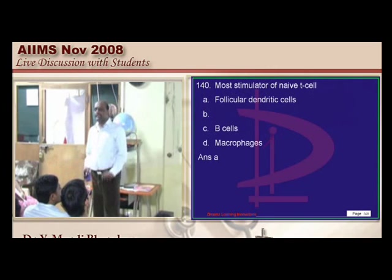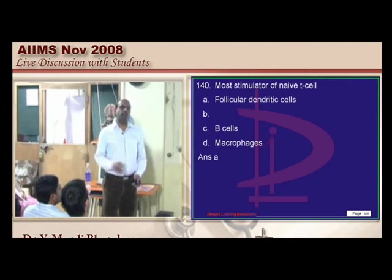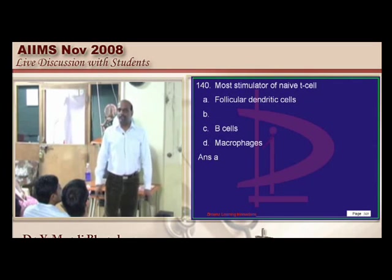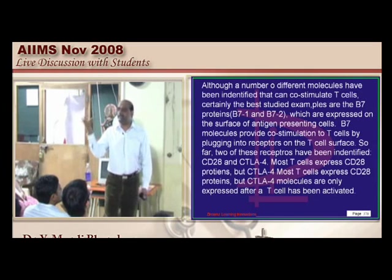The T-cell is a naive cell — it does not know antigens, antibodies, or how to multiply. It is like a first-year MBBS student who needs to be educated.